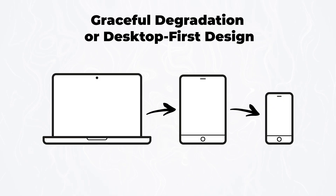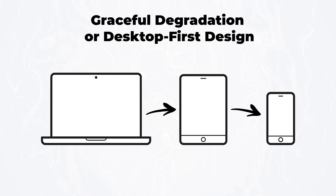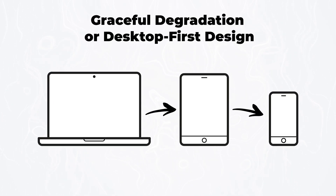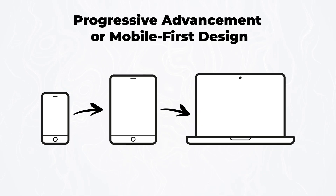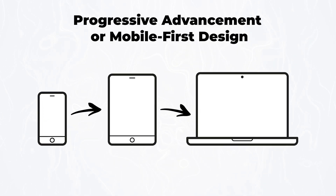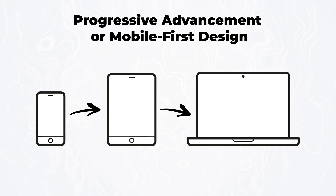Or should we commence with the desktop view and scale down to accommodate mobile devices? Scaling down is often referred to as graceful degradation or desktop-first approach, while scaling up is called progressive advancement or mobile-first design.